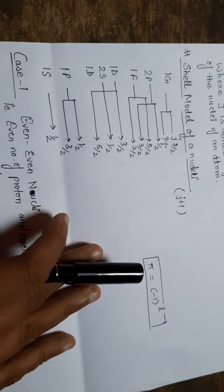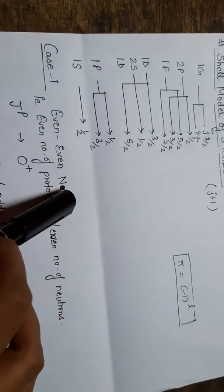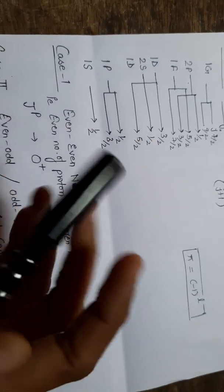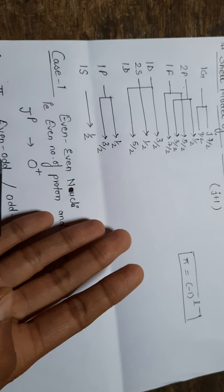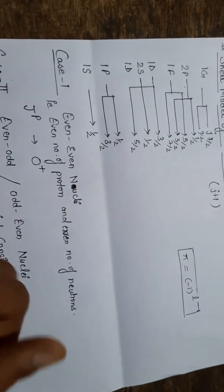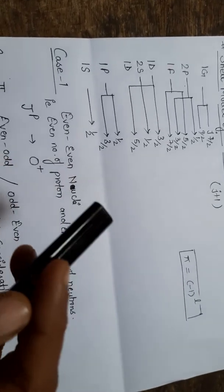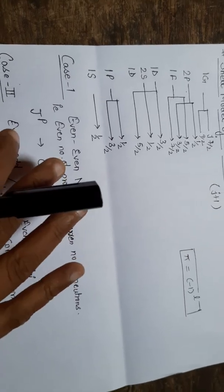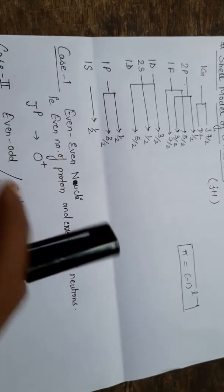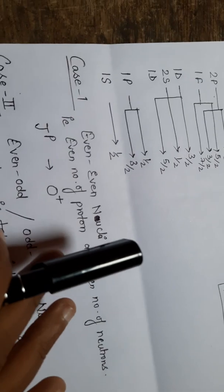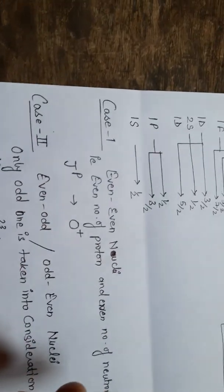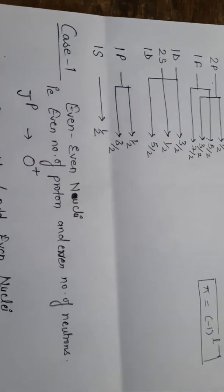The three cases are: first, an even number of protons and even number of neutrons; second, an odd number of protons with even number of neutrons, or even number of protons with odd number of neutrons; and third, an odd number of protons and odd number of neutrons.